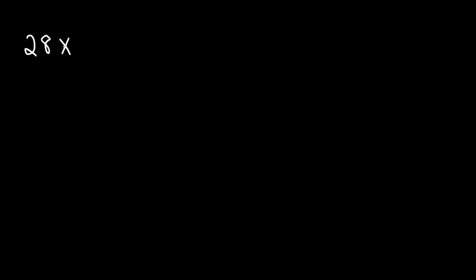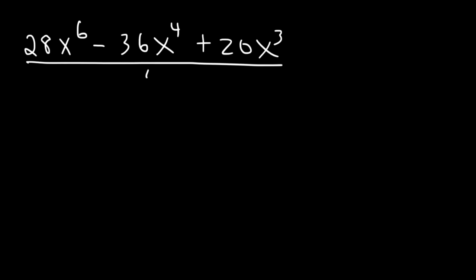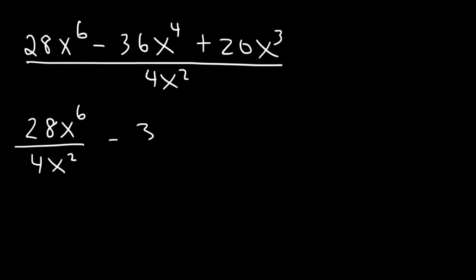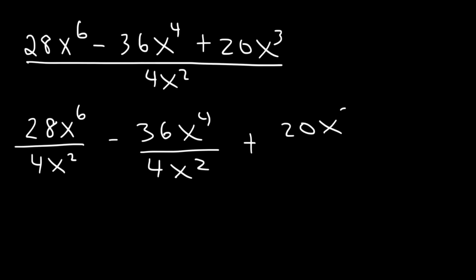Now let's try one more example — feel free to work on this one. We'll divide everything by 4x squared. First, let's begin by separating it into three fractions, and then go ahead and divide each one.